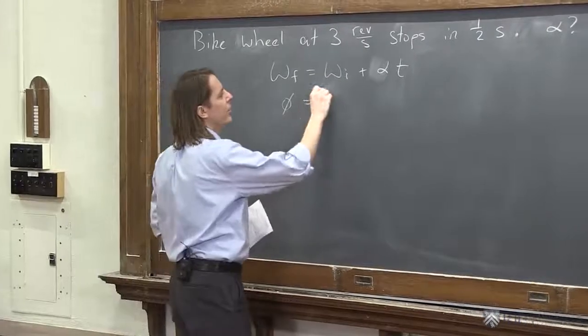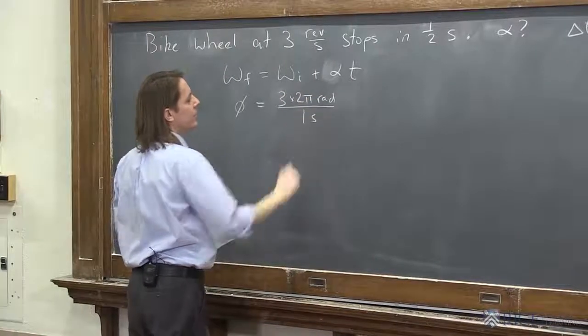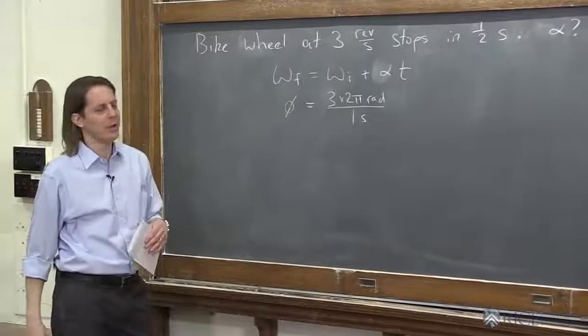So it is 3 times 2π radians in one second. So it's really just 6π radians per second.